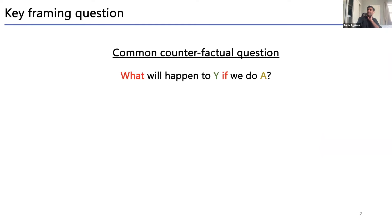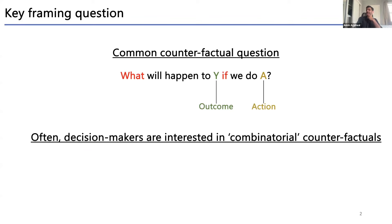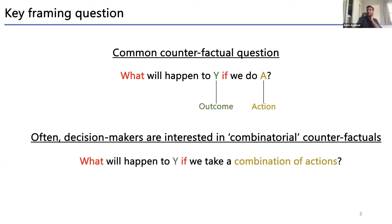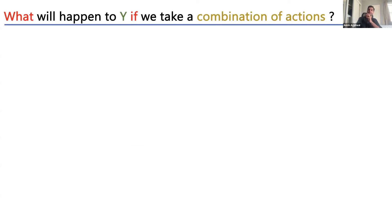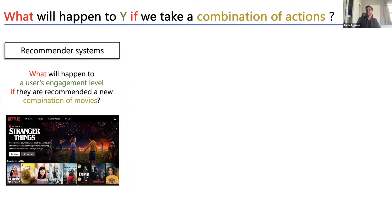In practice, we're often interested in combinatorial counterfactuals — what will happen to Y if we take a combination of actions. This shows up in many settings: recommender systems (what happens to user engagement if they're recommended a new combination of movies), gene knockout experiments (what happens to a patient's disease status if we knock down a combination of genes), and ML (what happens to prediction performance if we select a different combination of features).